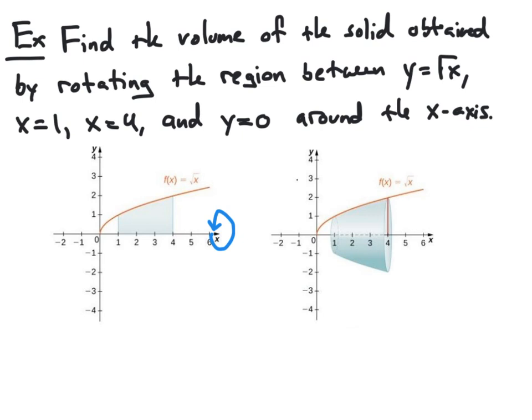In this example, we want to find the volume of the solid obtained by rotating the region between y equal the square root of x, x equal 1, x equal 4, and y equal 0 around the x-axis. Notice this is exactly the same region and solid we looked at previously, just described in words. Our region in the plane borders the axis of rotation, which is the x-axis, so we know that our cross-sections will be disks and we'll be able to use the disk method to compute this volume.